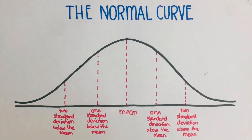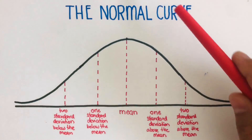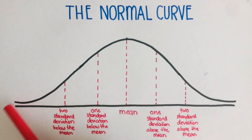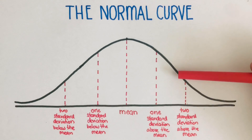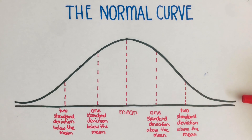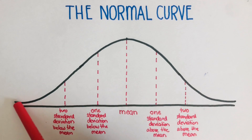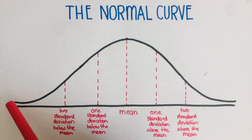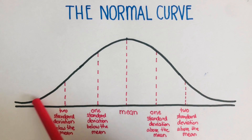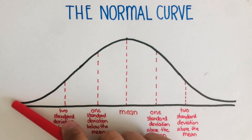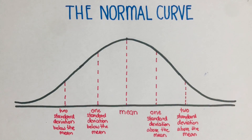Notice another important feature of this normal curve: the tails are asymptotic. Asymptotic means they are approaching closer and closer to the horizontal line but they're not going to touch it. This horizontal line is the asymptote — it just gets closer and closer but never touches it.